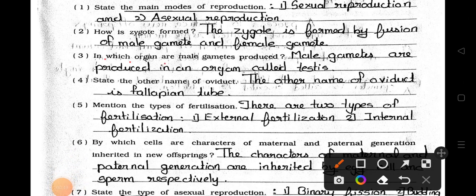Number 3: In which organ are male gametes produced? Answer: Male gametes are produced in an organ called testis. Number 4: State the other name of oviduct. Answer: The other name of oviduct is the fallopian tube.